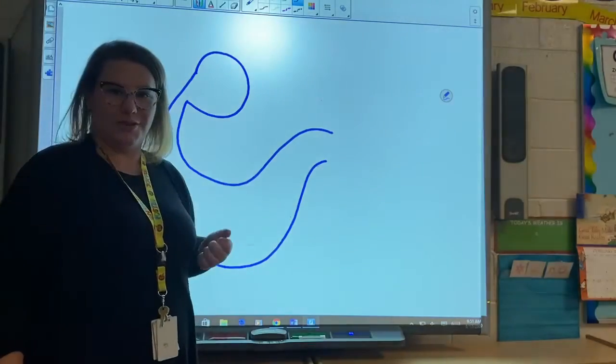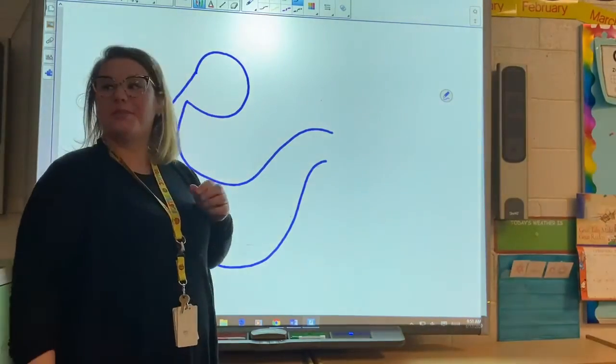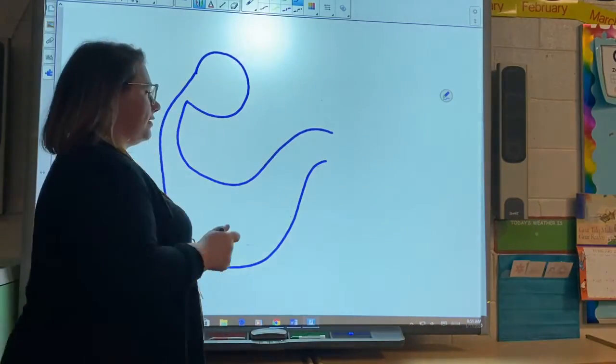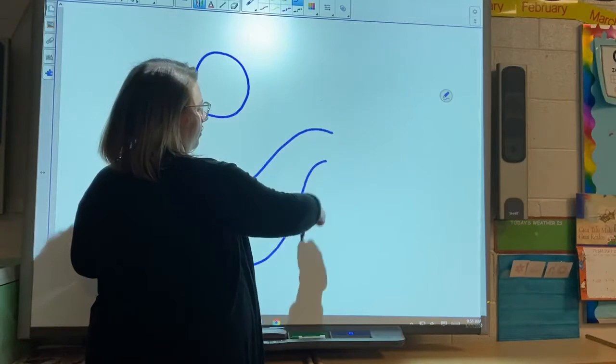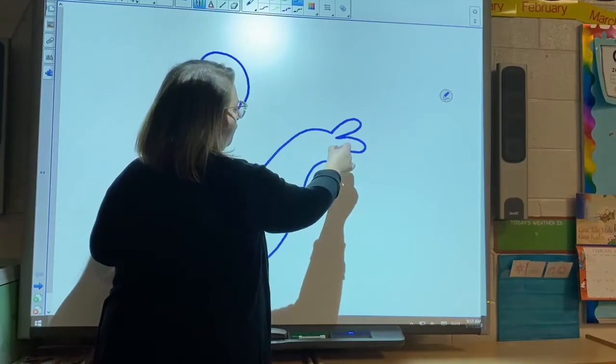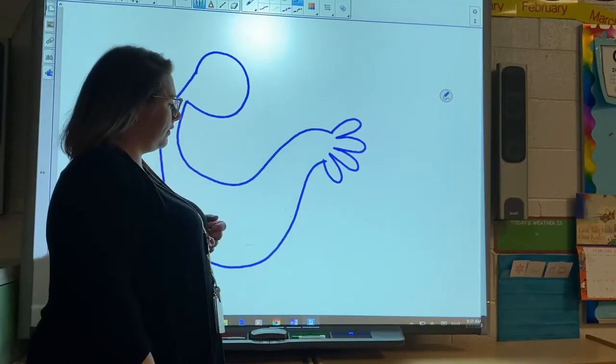Wow, do you know what it is yet? No, I don't suppose you do. Okay, we're gonna add some—I'll give you a hint—tail feathers. So this is our tail, we're gonna make some curved like oval-shaped tail feathers, okay? There's our tail.